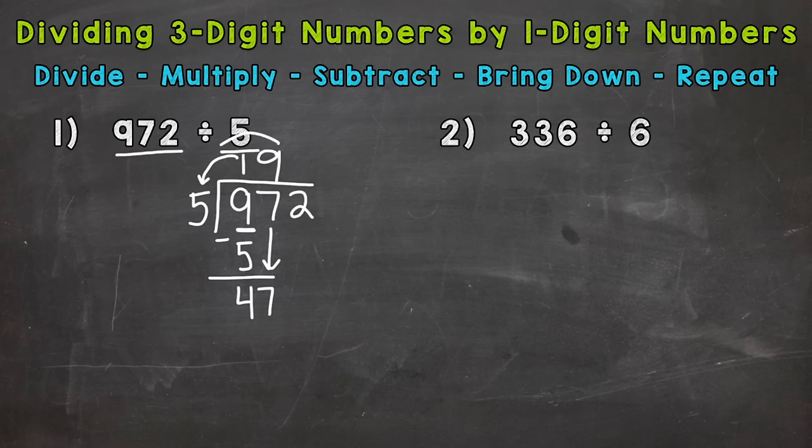Then we come back around and multiply. Nine times 5 is 45. Subtract, we get 2, bring down. So now we repeat. So divide, 22 divided by 5. How many whole groups of 5 out of 22? Well, four, that gets us to 20. Come back around and multiply. Four times 5 is 20.